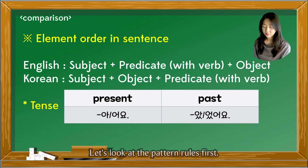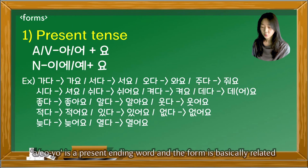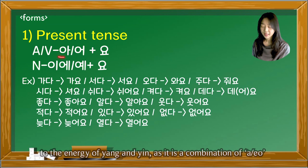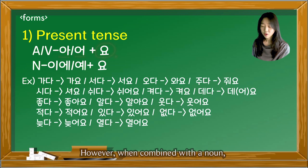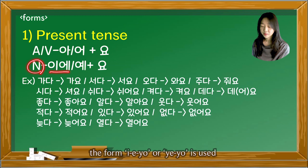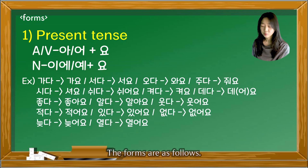Let's look at the pattern rules first. 아어요 is a present ending word, and the form is basically related to the 양 and 음 vowel harmony, as it is a combination of 아/어 from the first video, with 요 added to the end. However, when combined with a noun, the form 이에요 or 예요 is used behind consonants and vowels respectively.